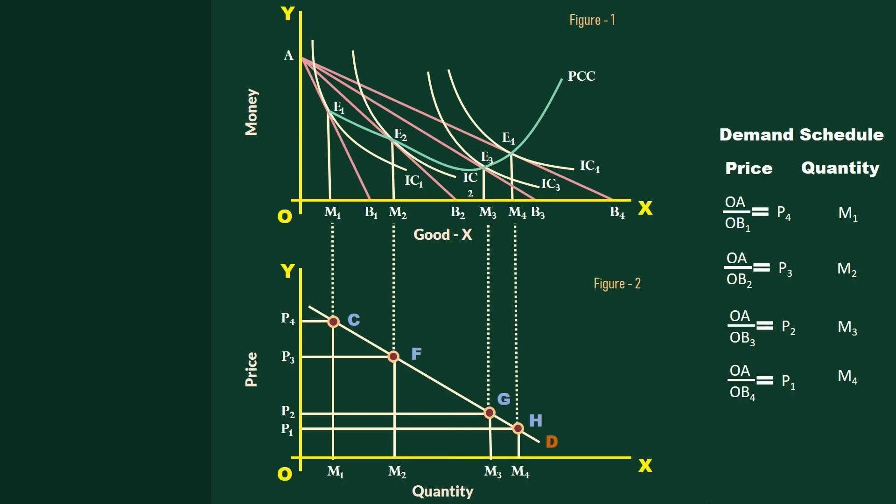Good X is a normal good. The demand curve of a normal good always slopes downward from left to right.